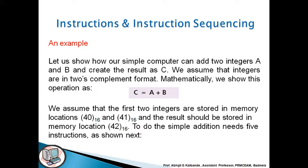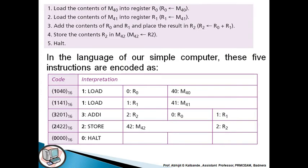To do the simple addition we need five instructions as shown. Load the contents of M40 into register R0. Load the contents of M41 into register R1. Add the contents of R0 and R1 and place the result in R2. Store the contents of R2 in M42. Halt.